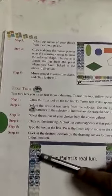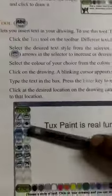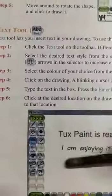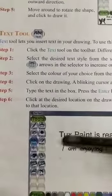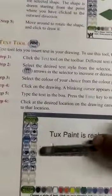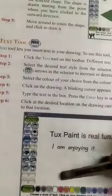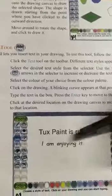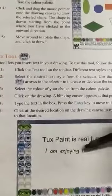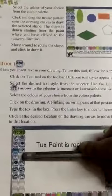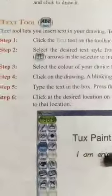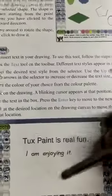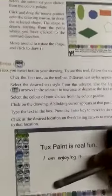Text tool. This ABC tool is our text tool. We click on this tool and we will find a cursor. With the help of that cursor, we can type the text. For example, 'Tuxpaint is real fun, I am enjoying it' — this is written with the help of the ABC text tool. We can select the text and then choose whatever color we want.